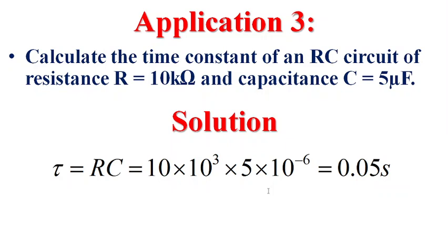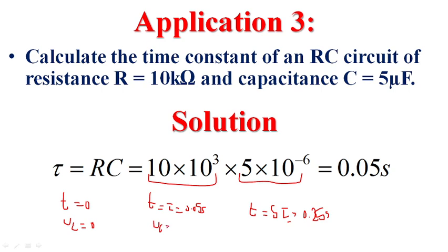For example, calculate the time constant of an RC circuit of resistance 10 kilohms and capacitance 5 microfarad. The time constant tau equals RC. Resistance 10 kilohms, we multiply by 10 power 3 to convert it into ohms. C is 5 microfarad, we multiply by 10 power minus 6 to convert into farads. Therefore, tau equals 0.05 seconds. If we start at T equal to zero and the capacitor is initially uncharged, UC equal to zero, this capacitor needs 5 tau, 0.25 seconds, to complete the charging process. At T equal to tau equals 0.05 seconds, the capacitor obtains 0.63 of its maximum value, which is E.